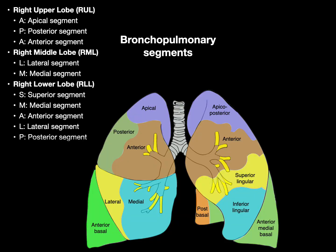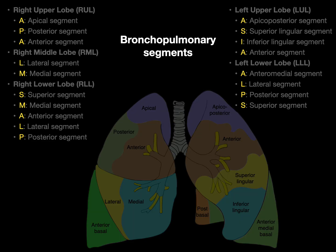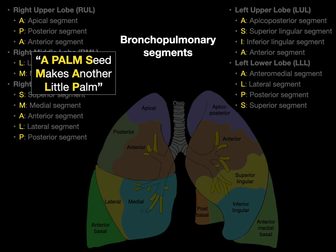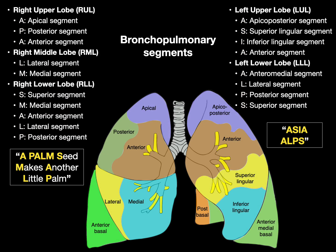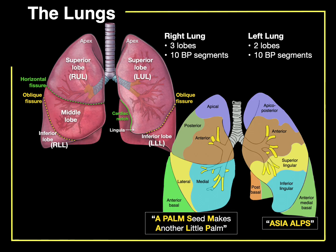There are right and left bronchopulmonary segments. Here's a mnemonic to help remember them: take the first letter of each segment name. For the right, use the phrase 'A palm seed makes another little palm.' For the left, use 'Asia Alps' — the first letter of each of those segments. That's a way to help remember each of the individual bronchopulmonary segments. And that, my friends, are the lungs in a nutshell.